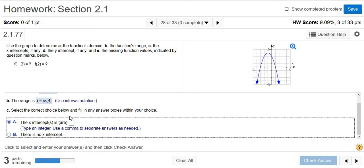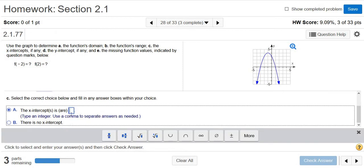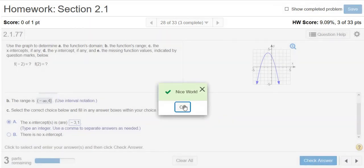So I'm going to click it here. And then it says, use a comma to separate answers. So negative 3, comma, 1. Moment of truth. Yep, got it right.